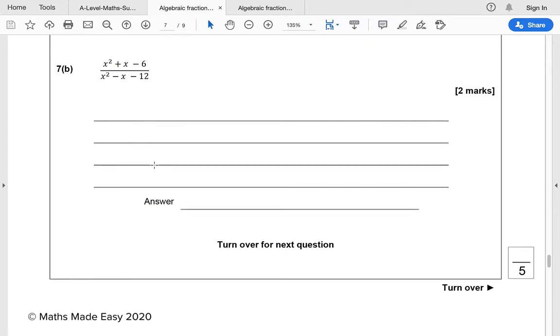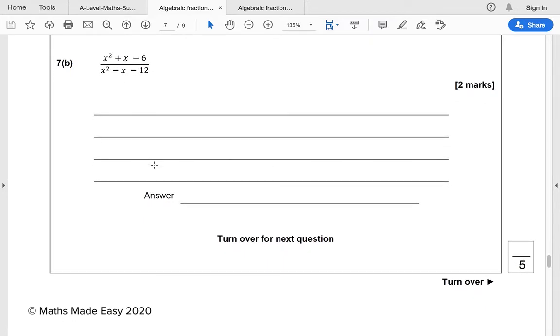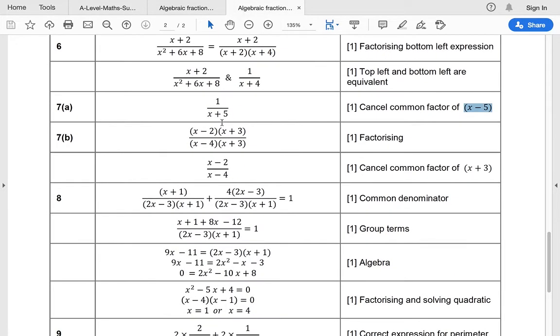Let's have a look at this final one, question 7. Pause the video there. Can you have a go at that? Hopefully you've done that. Let's see if you've got the right answer. So the first thing you would have to do there is factorize both the top and the bottom. And then you can see that you can cancel an x plus 3. Brilliant work.